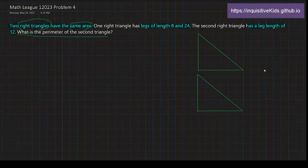The first triangle has legs of length 8 and 24. Remember, legs is referring not to the hypotenuse, this longer side here, but these two shorter sides of a right triangle. So, 8 and 24. The second right triangle has a leg length of 12. So, one of the lengths of the legs is 12.